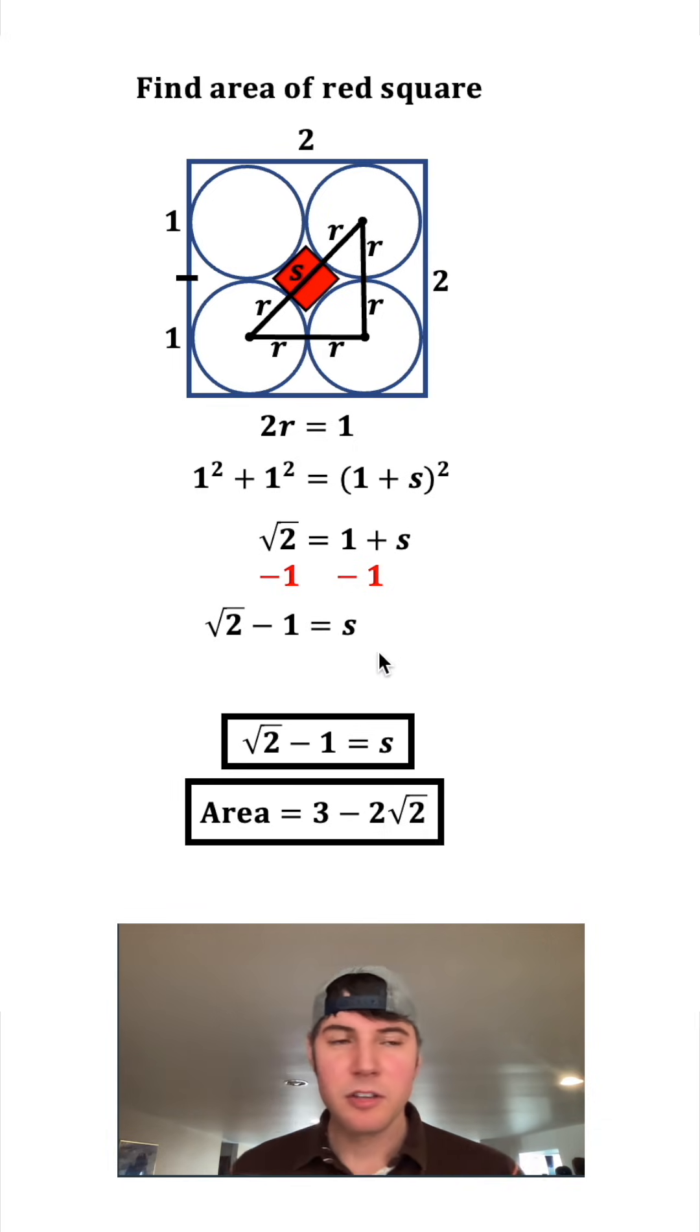So now we solved for s, and check this out, it's the same s that we got before. So since we got the same s both methods, we know they're both going to give us the same area. So the answer to the question is the area is equal to 3 minus 2√2.